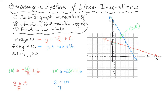This is the area we are looking for. We have solved and graphed the inequalities, shaded, and found the feasible region. Now we need to find the corner points — the vertices of this quadrilateral. We have one at (0, 0), one at (8, 0), one at (0, 6), and then there's one more here. I did a pretty good job of graphing — I can look at that and say that is (6, 4).